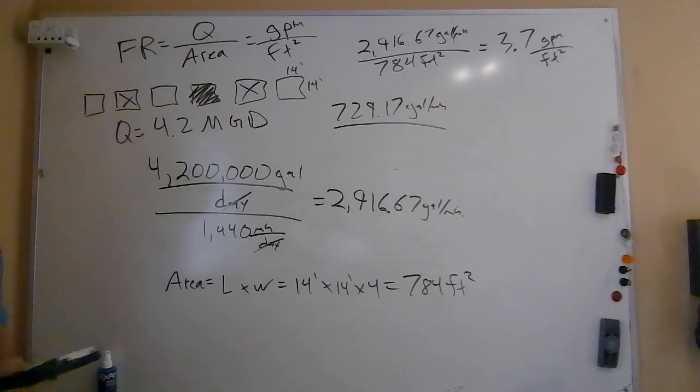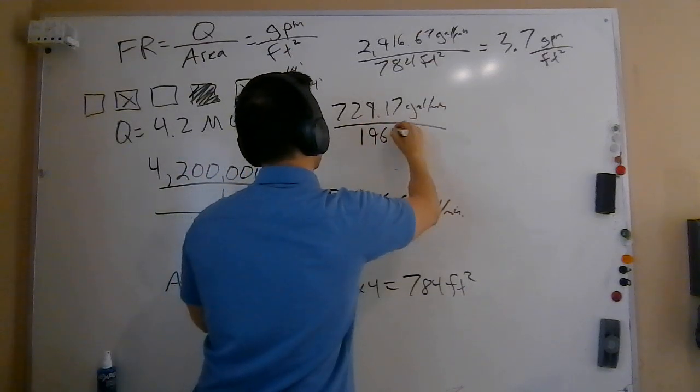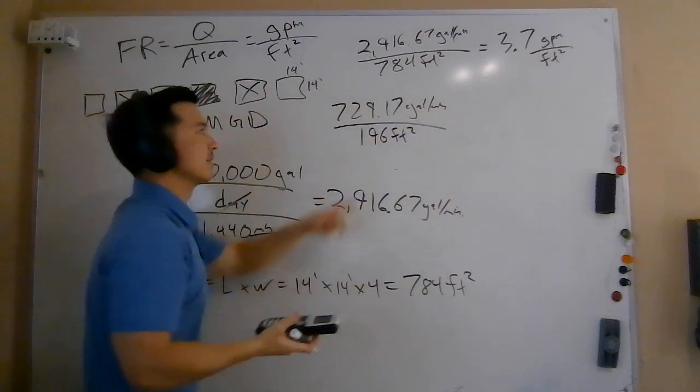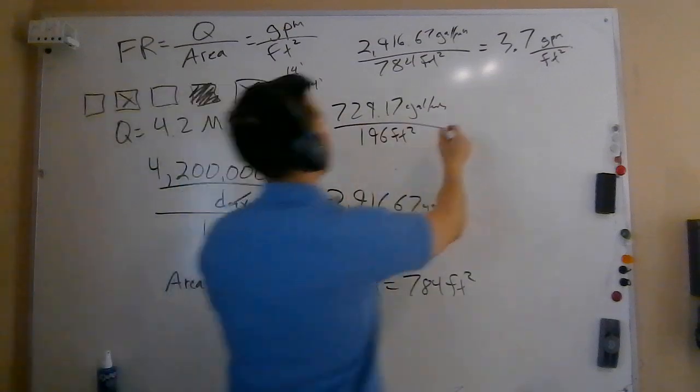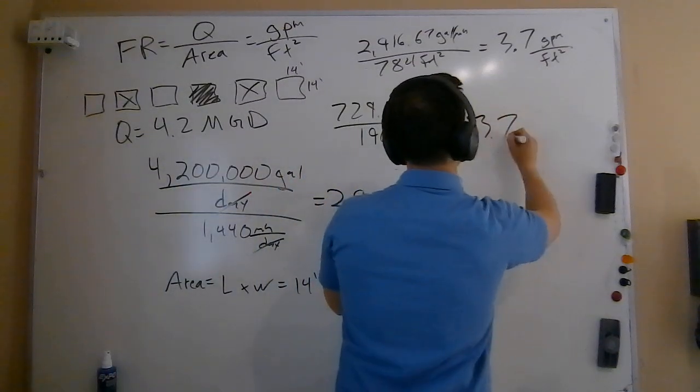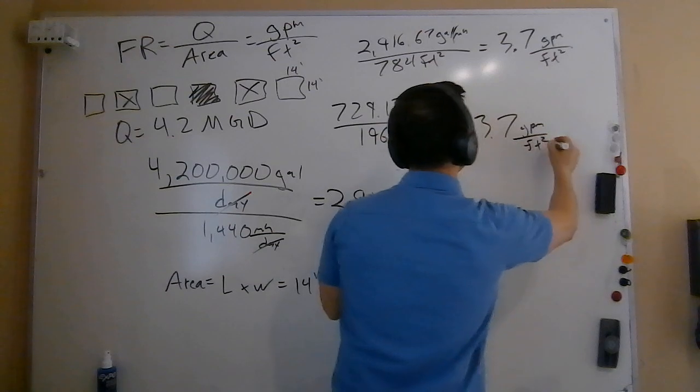So 14 times 14 is going to give me 196. So 196 square feet, that's the area of one filter. When I divide these out, I should get the same exact number. So let's figure that 196. And I get to 3.7. And that's again in gallons per minute per square foot.